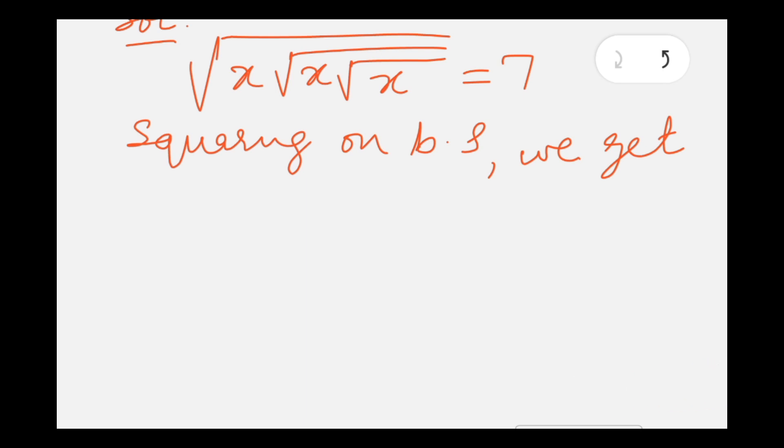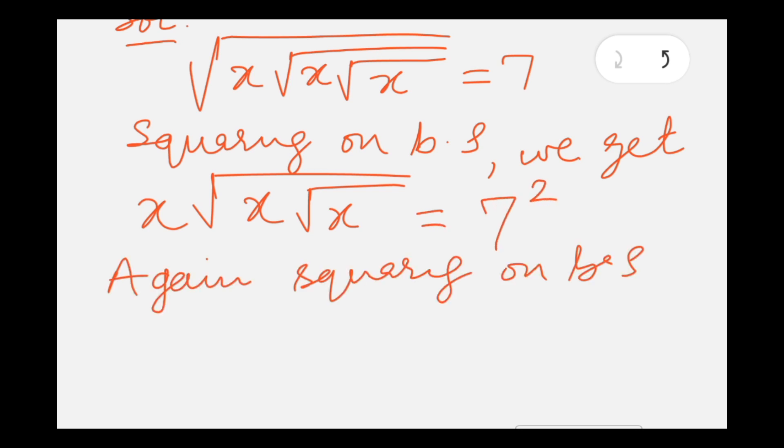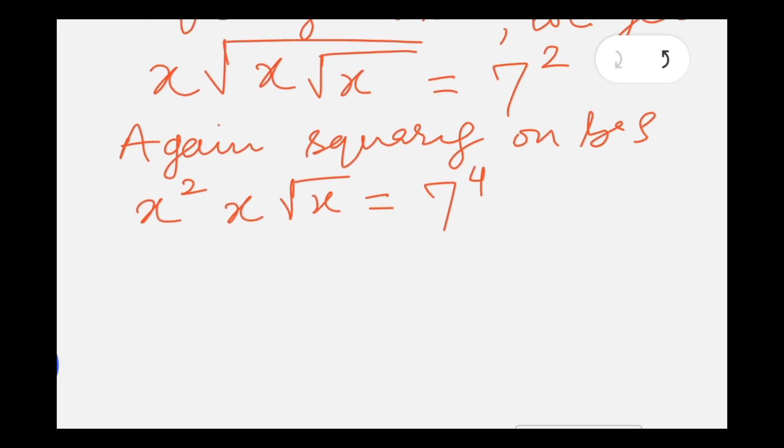Obviously, so first time when we take square, that is x times square root x times square root x equals to 7 squared. Now again we will take square on both sides so that we get rid of another square root, which results x squared times x times square root x equals to 7 to the power 4. Now only one square root is left.